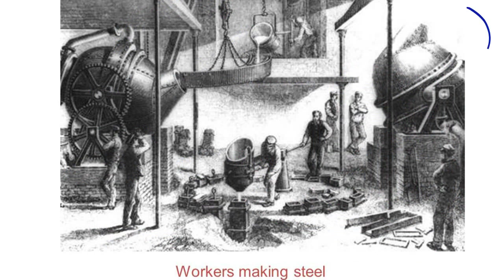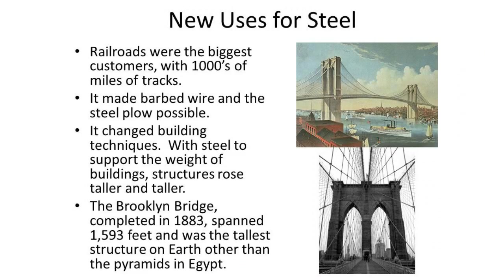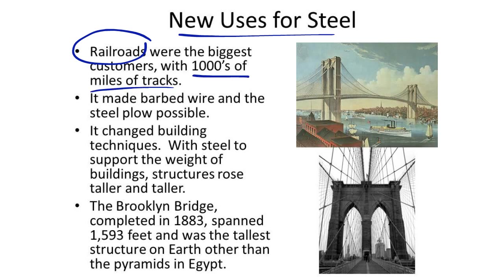This is an illustration of what it looked like for workers making steel using the Bessemer process. There were many new uses for steel as a result. Railroads were the biggest customers with thousands of miles of tracks. It also made barbed wire and the steel plow possible.